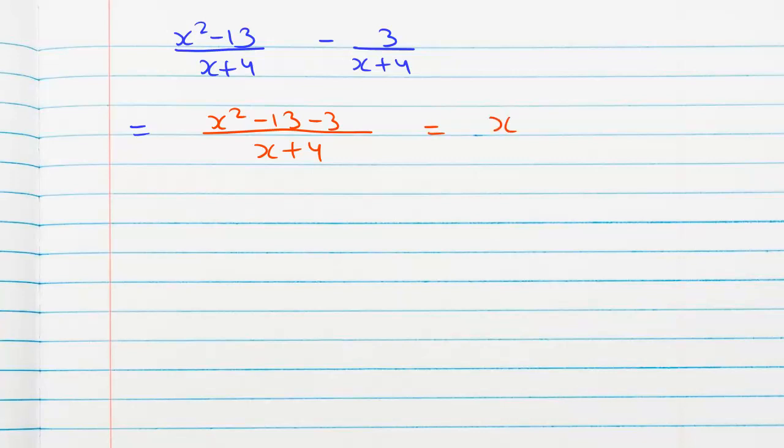In the numerator, we get negative 13 minus 3, that's negative 16 over x plus 4. And this is a perfect square, so we get x plus 4 times x minus 4 over x plus 4. These two get cancelled, and we are left with x minus 4.